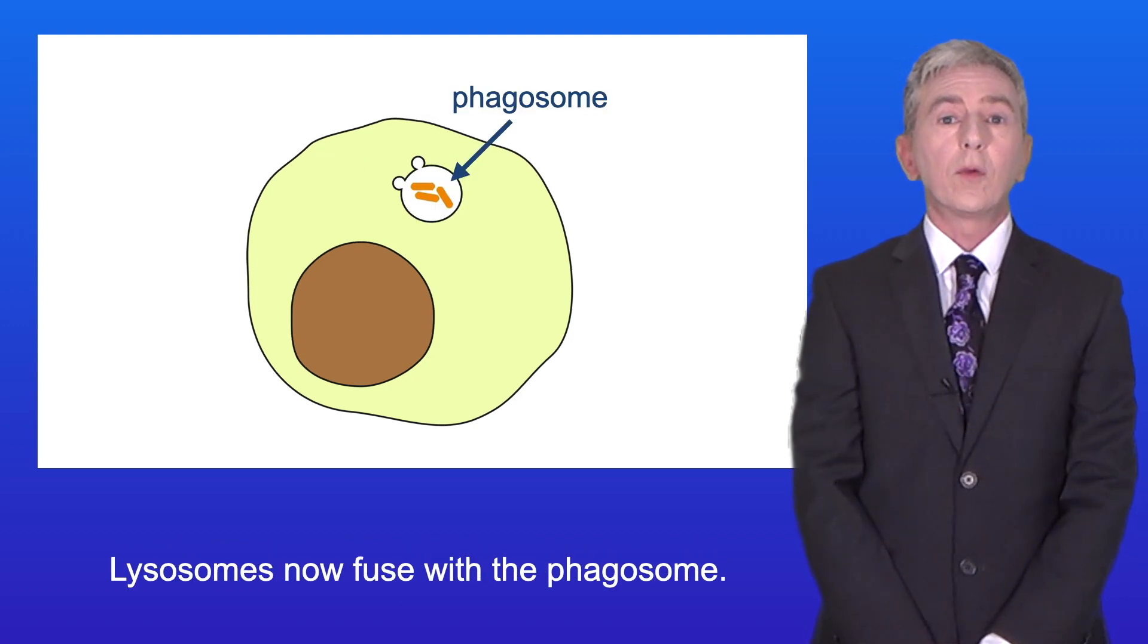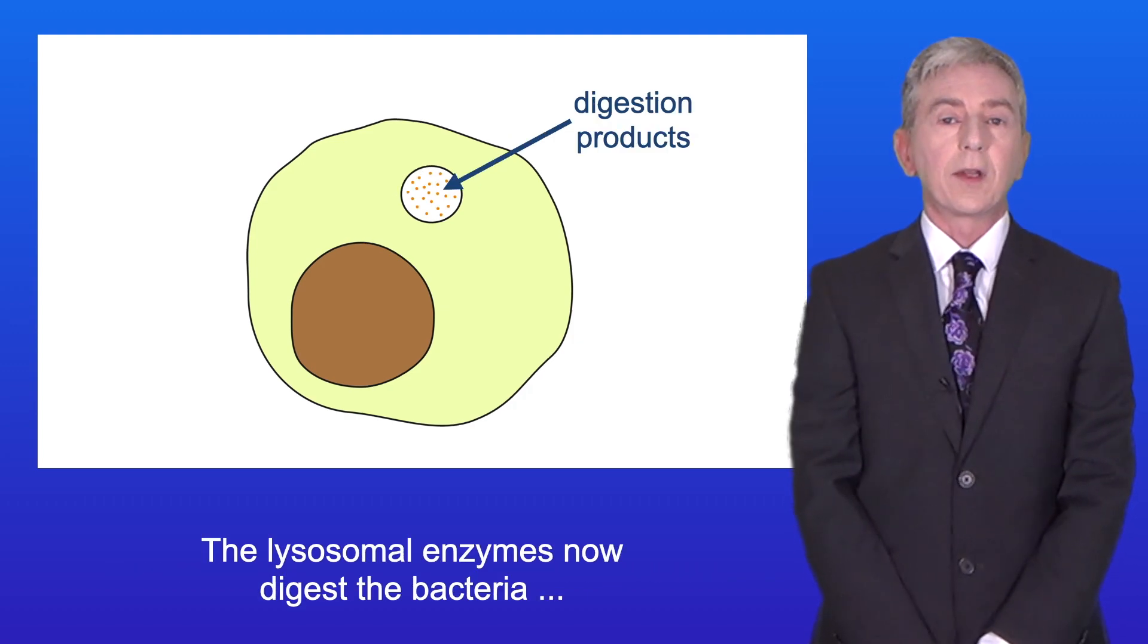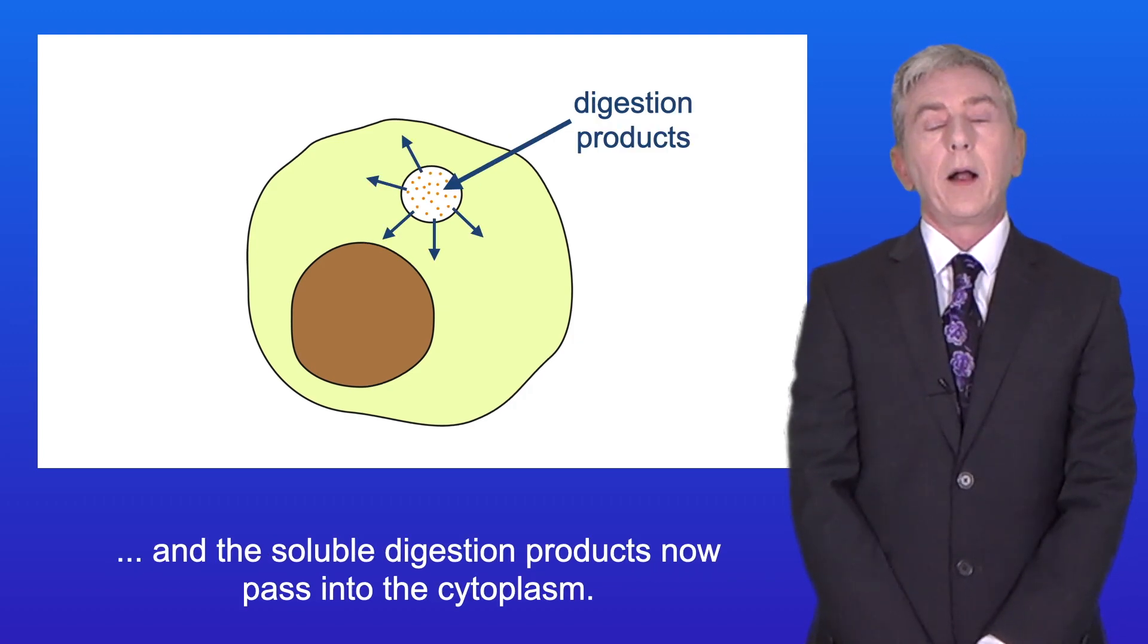Lysosomes now fuse with the phagosome. The lysosomal enzymes now digest the bacteria and the soluble digestion products now pass into the cytoplasm.